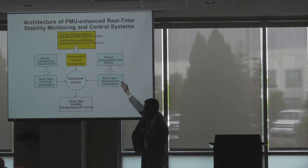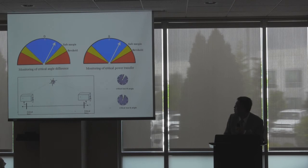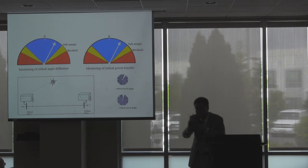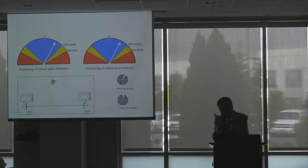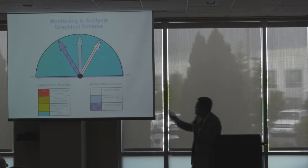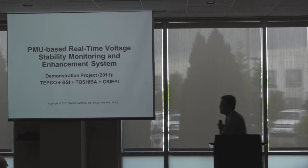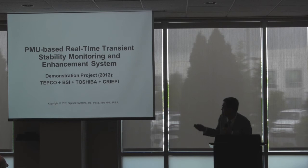My true belief is that with PMU providing real-time information — such as current line flow — combined with the EMS system providing the system model, and online computation providing assessment and control information, we should integrate these three pieces together. With the PMU we get the real-time needle values; the threshold values come from online computation. So you know where you are and where your limit is — that is your current margin, whether for voltage stability, thermal limit, voltage violation, or transient stability. We also did a project at Toshiba creating a PMU-based real-time voltage stability monitoring and enhancement system in 2011, and last year for transient stability monitoring and enhancement.